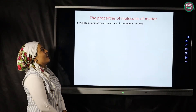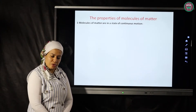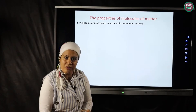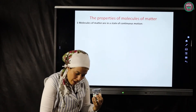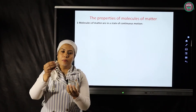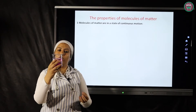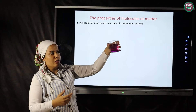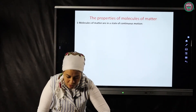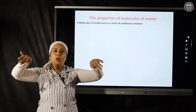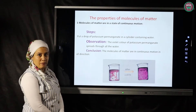The first property: the molecules of matter are in a state of continuous motion. To understand what this means, we will do a simple experiment. We bring a beaker containing water and add a spoon of potassium permanganate, put it inside the beaker, and shake it carefully. We observe that all the water inside the beaker becomes purple, because the molecules of the potassium permanganate spread all over the water — showing that molecules are in a state of continuous motion.